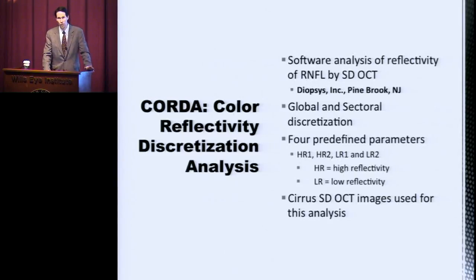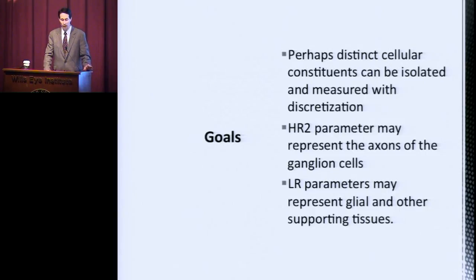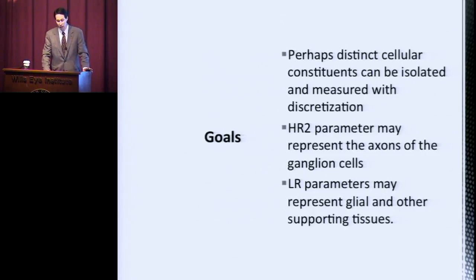They have broken the OCT reflectivity patterns down into four different patterns based on high and low reflectivity. There's a thought that the differences in reflectivity may reflect differences at a cellular level, and so different cellular constituents may be isolated by looking at the different reflectivities. In particular, early work suggests that the HR2 parameter may represent the axons of ganglion cells.